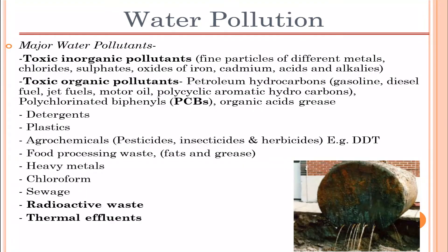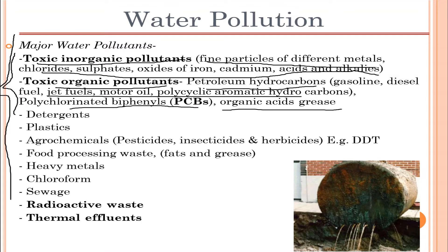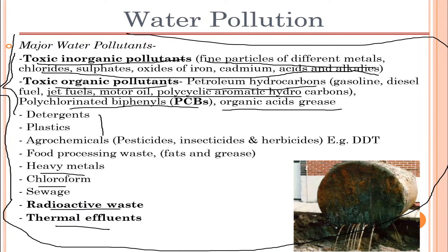Talking about water pollutants, we have toxic inorganic pollutants and toxic organic pollutants. Toxic inorganic pollutants include fine particles of different metals, chlorides, sulfates, oxides of iron, cadmium, and acids. Organic pollutants include petroleum hydrocarbons, jet fuels, motor oil, PCBs (polychlorinated biphenyls), organic acids, detergents, plastics, heavy metals, chloroform, radioactive waste, and thermal effluents.